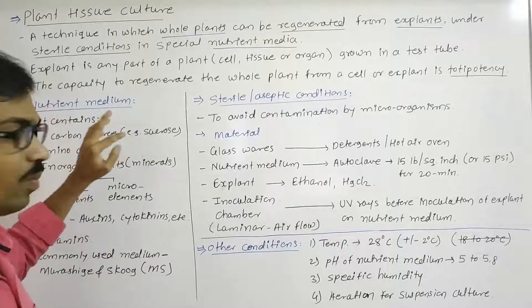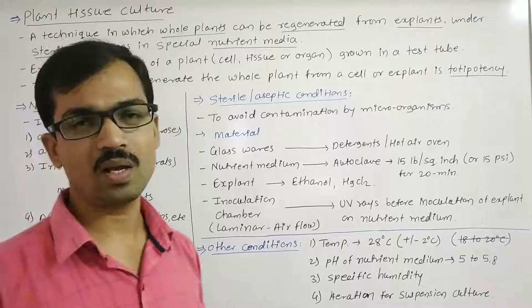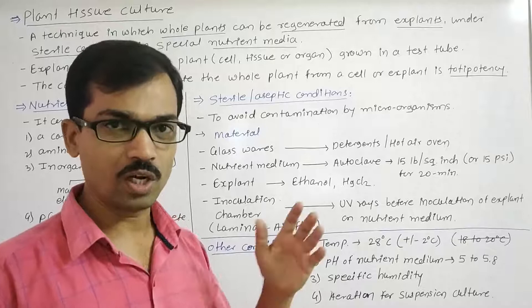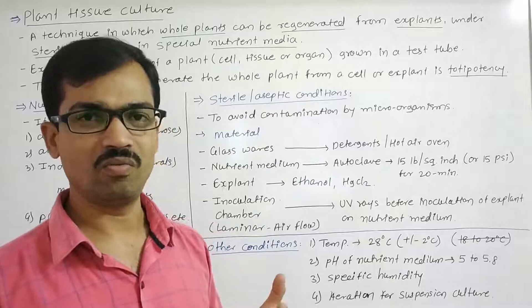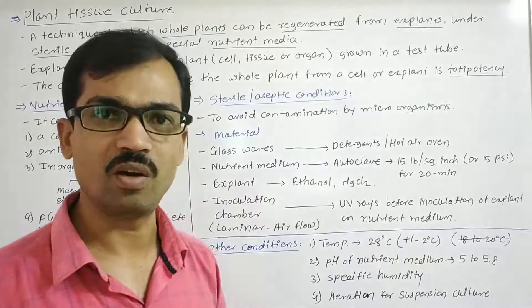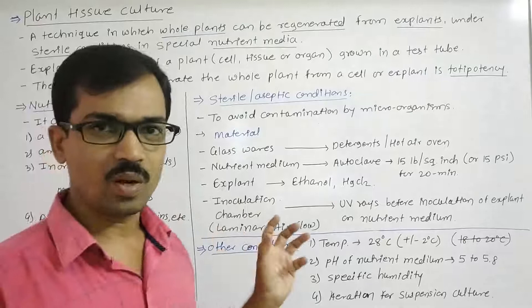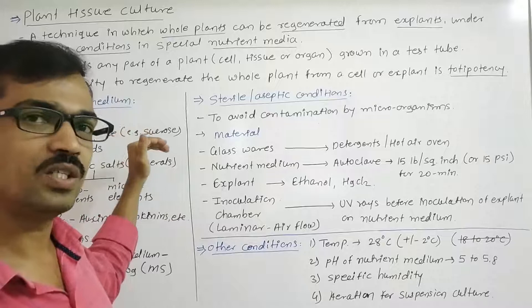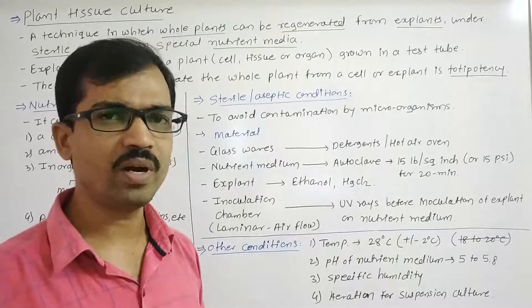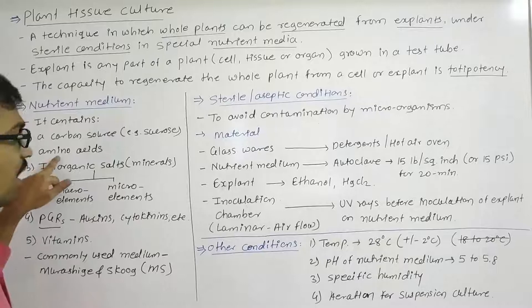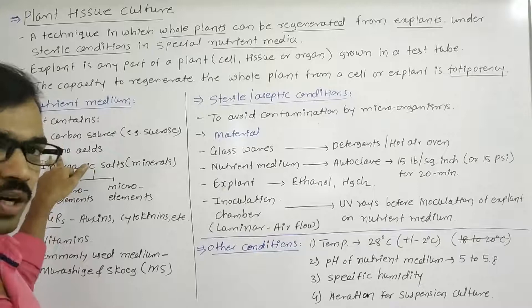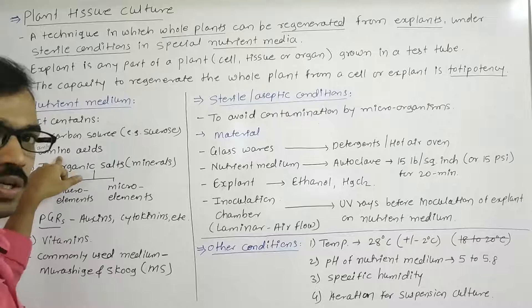The carbon source in plant tissue culture is generally provided in the form of sucrose or glucose. Proteins can also be supplied as ready-made amino acids in the nutrient medium. Inorganic salts must also be provided, since the plant in the laboratory is not rooted in soil and cannot absorb minerals. Minerals are classified as macro elements, required in large quantities, and micro elements, required in small quantities — both are provided in the plant tissue culture medium.